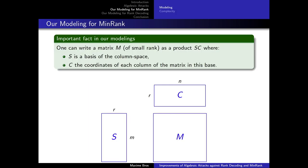Both our modelings for min rank and the rank decoding problem rely on an important fact: one can write a matrix M — usually of small rank — as a product S times C, where S is a basis of the column space of M, and C is the matrix containing the coordinates of every column in this basis S. Of course, if M is not of small rank, this decomposition would be trivial. It is also important that the roles of S and C are perfectly permutable: we can consider C as a basis of the row space of M, and then S contains the coordinates of every row of M in the basis C.